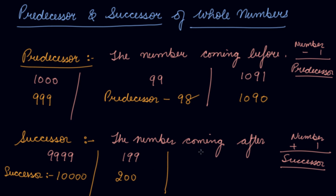Calculate the successor of 219803. Now, what will be the successor? What comes after 03? It's 04. So, 219804. This is very simple and easy — predecessor and successor. Predecessor means the number coming before, successor means the number coming after. In order to calculate the predecessor, we subtract 1 from the number. In order to calculate the successor, we add 1 to the number.